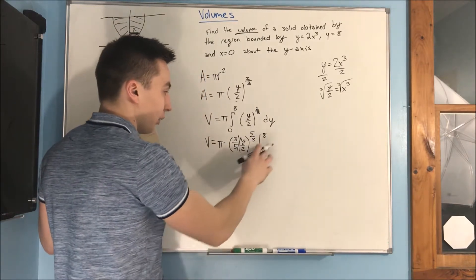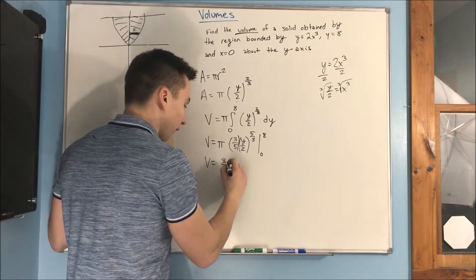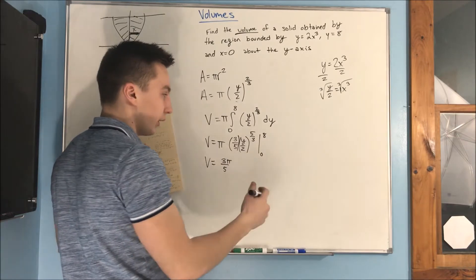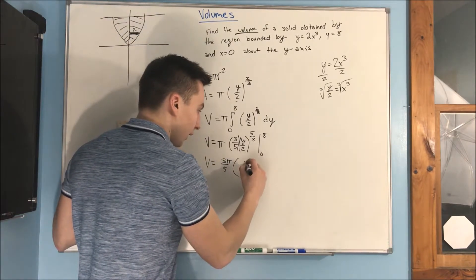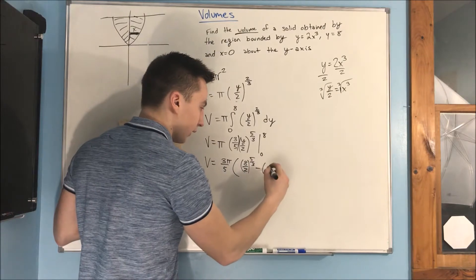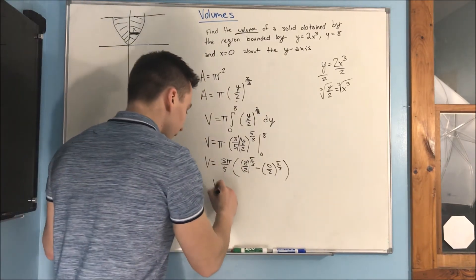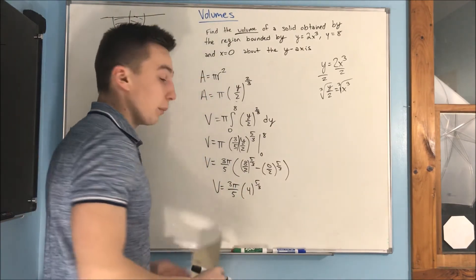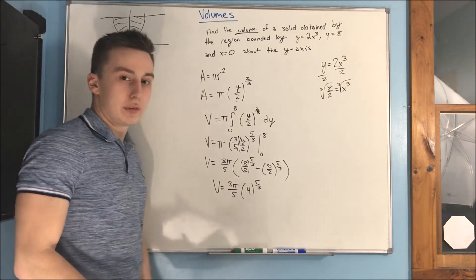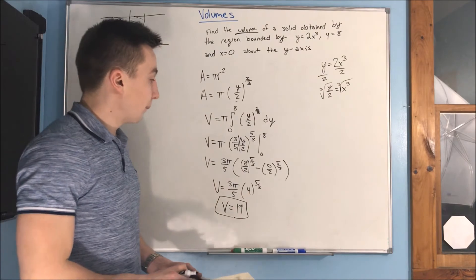Now we plug in and evaluate: f of b minus f of a. We get 3 pi over 5 times (8 over 2) to the 5 thirds, minus (0 over 2) to the 5 thirds. This becomes 3 pi over 5 times 4 to the 5 over 3. You can put that in your calculator — if not, you can leave it in that form. After putting it in a calculator, your volume is going to equal 19.